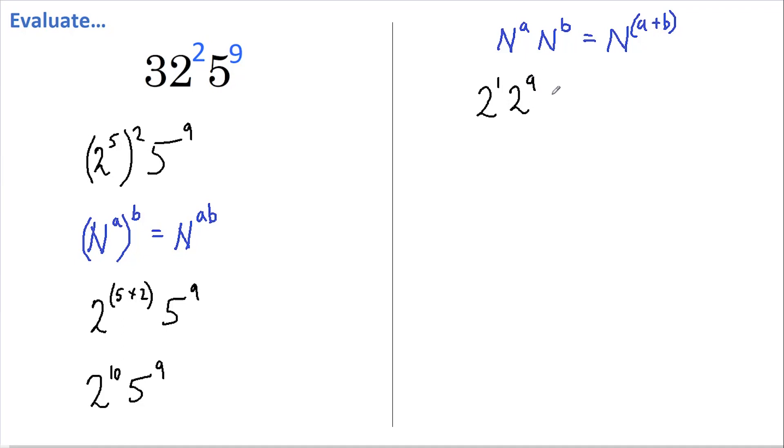Now the reason I decided to split the power of 10 into 1 and 9 is because I have a power of 9 here. Where we have powers that are the same, we can use this rule: a number raised to a power multiplied by a different number raised to the same power can be rewritten as those two numbers multiplied together, all raised to that same power.